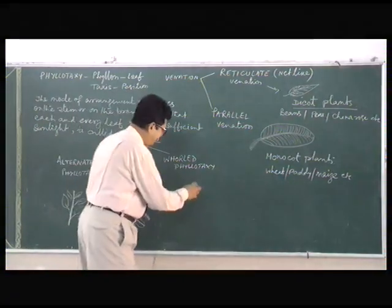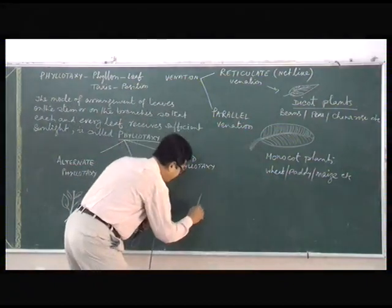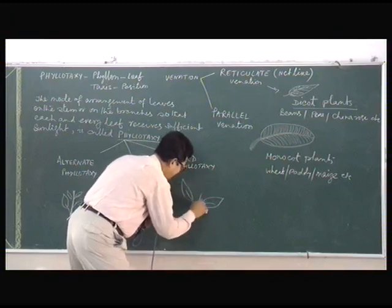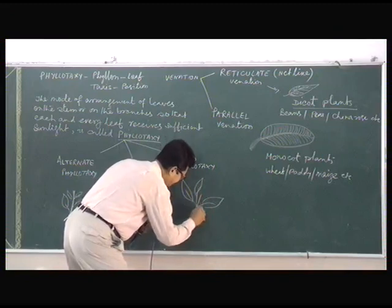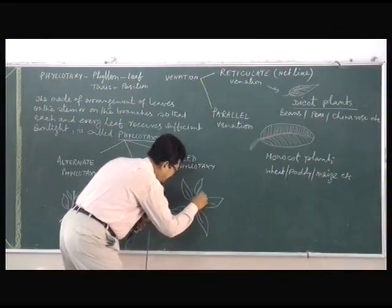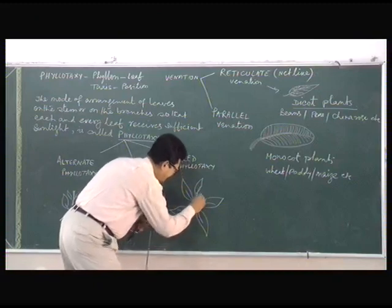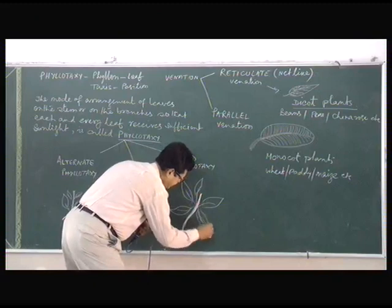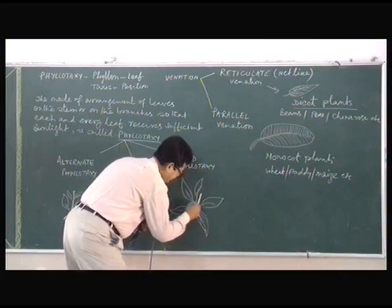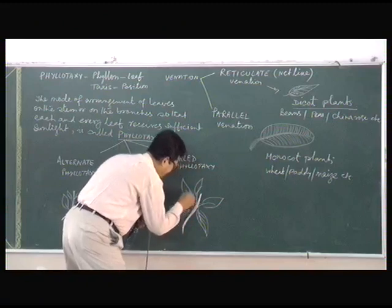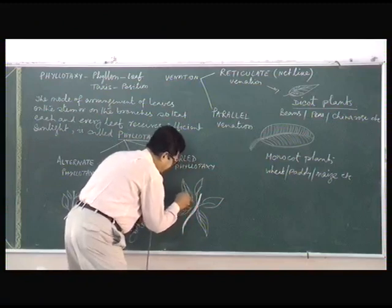On the other hand, in whorled phyllotaxy, we have a number of leaves growing from the same node. Oleander is the example. This is the number of leaves growing from the same node, and oleander is the example.